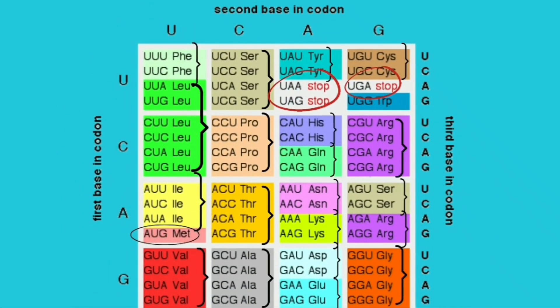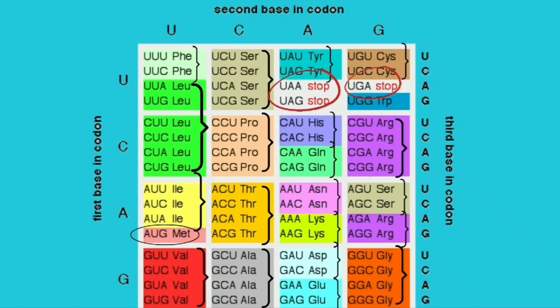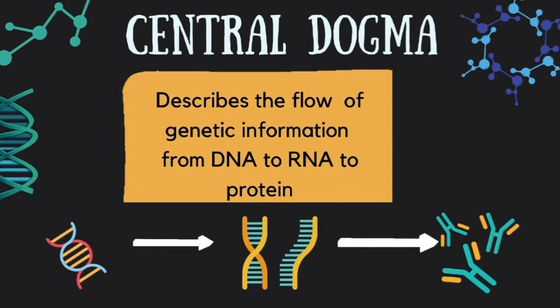This table shows the genetic code. Each combination of three nitrogenous bases on the mRNA molecule is a codon — a three-letter code for a specific amino acid. AUG codes for methionine (MET), also known as the START codon. We have three stop codons: UAA, UAG, and UGA.